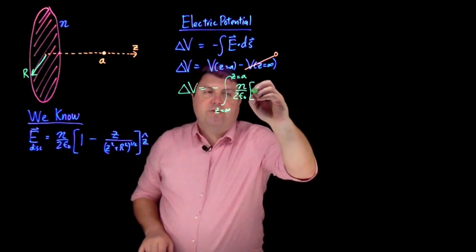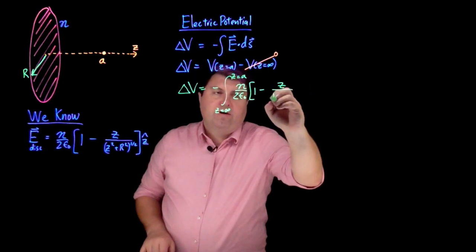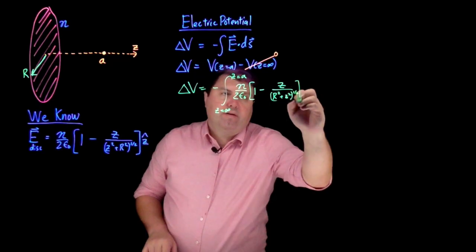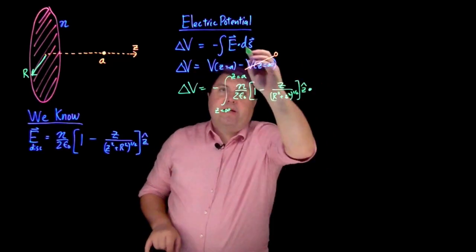Eta over two epsilon not, one minus z over... And we're just going to have the r squared first, r squared plus z squared to the one half. Z hat dot, and then my ds.